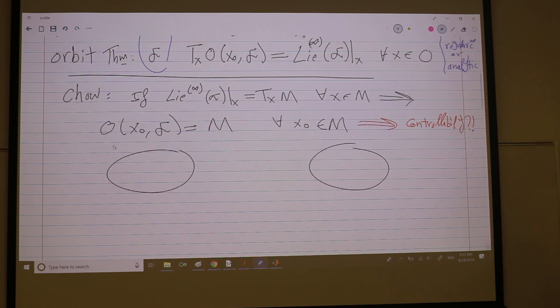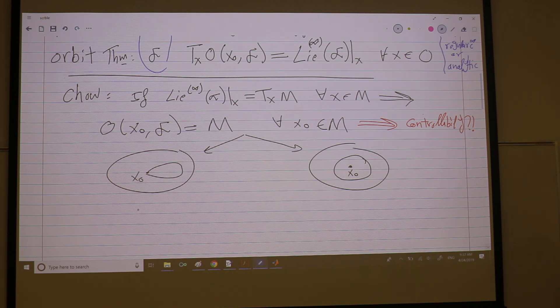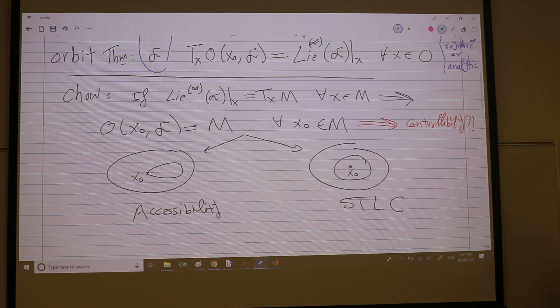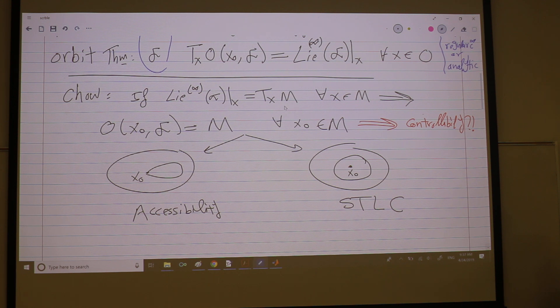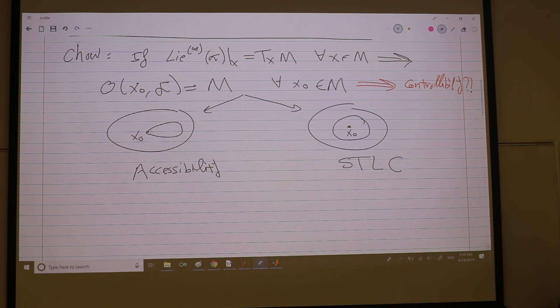So this invoked the following definition for accessibility. This condition implies that your reachable set around x naught from x naught can be something like that, or it can be something like that. These are the reachable sets. So we call this property accessibility, and we call this property small time local controllability. In either case we need the Lie brackets to cover the entire tangent space.